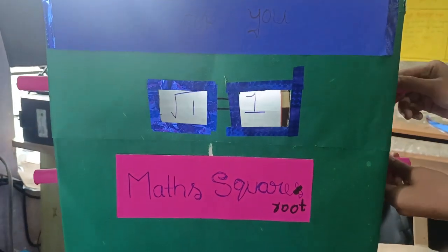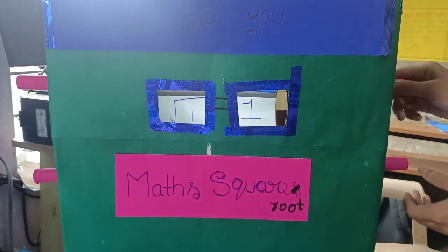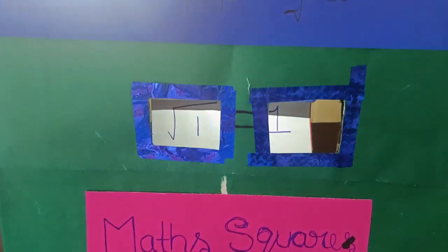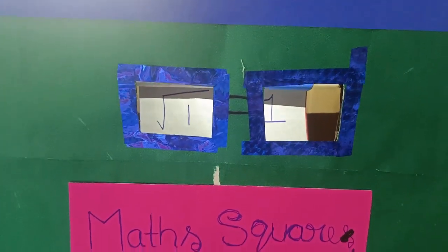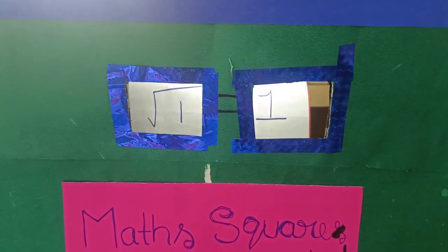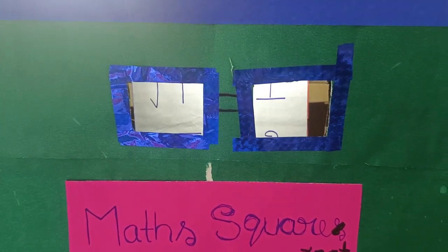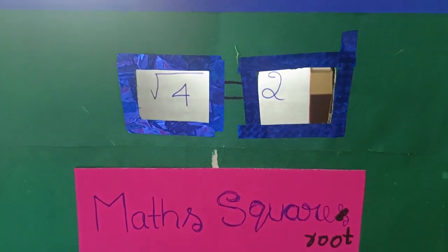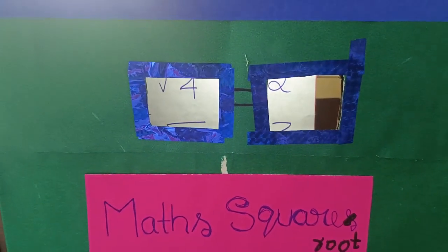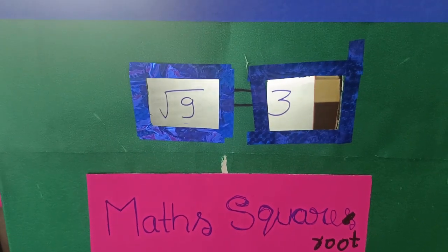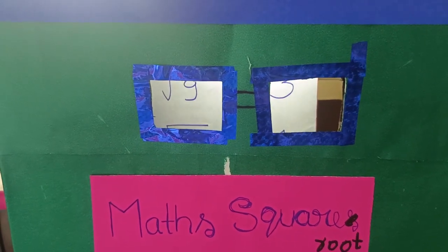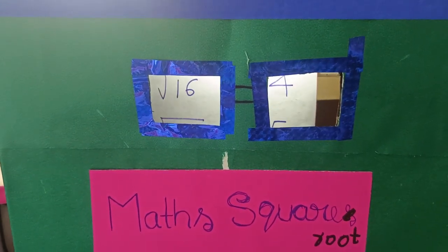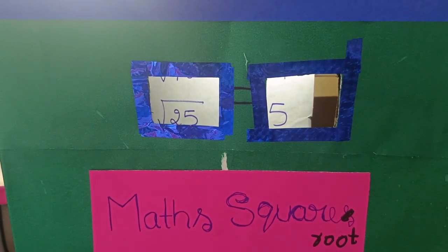Let's look at square roots: root 1 is 1, root 4 is 2, root 9 is 3, root 16 is 4, root 25 is 5, root 36 is 6, root 49 is 7.